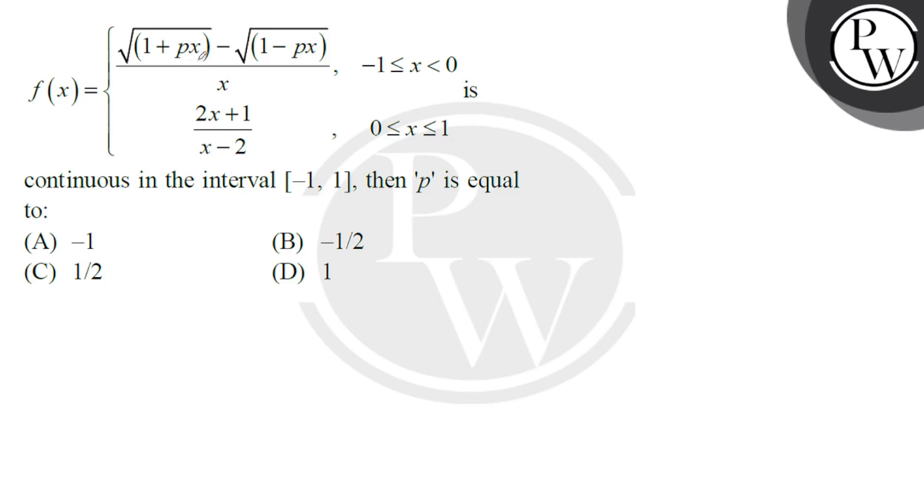Hello, here we have a function: √(1+px) - √(1-px) over x when -1 ≤ x < 0, and (2x+1)/(x-2) when 0 ≤ x ≤ 1.